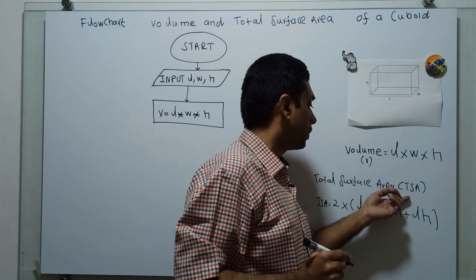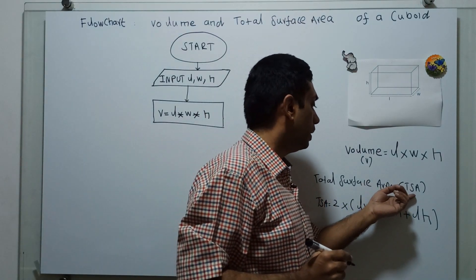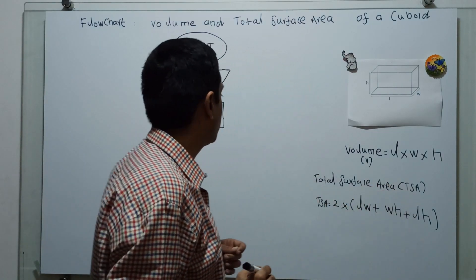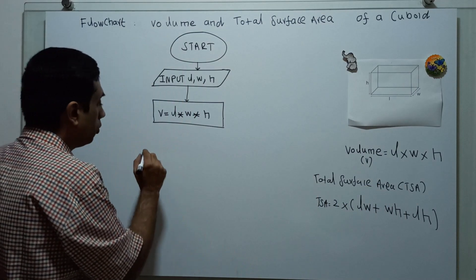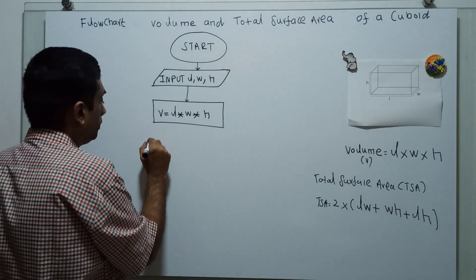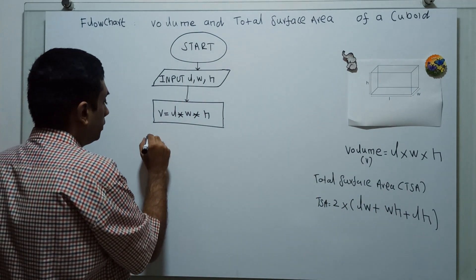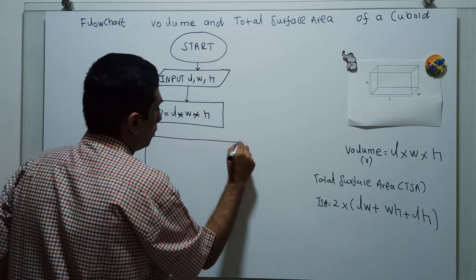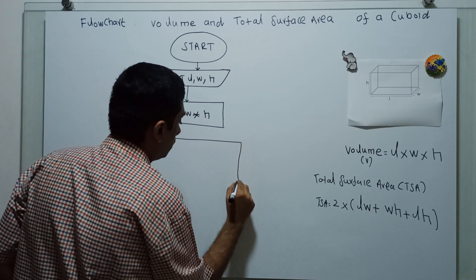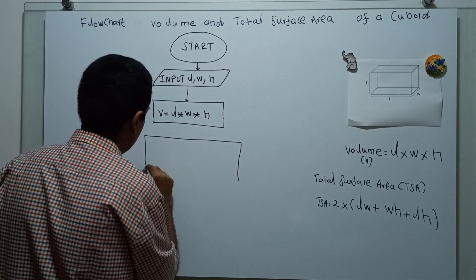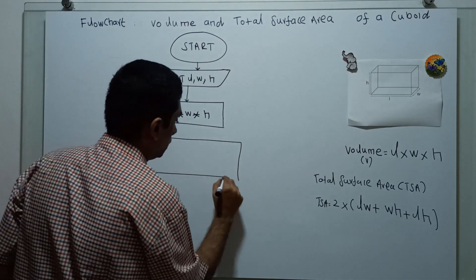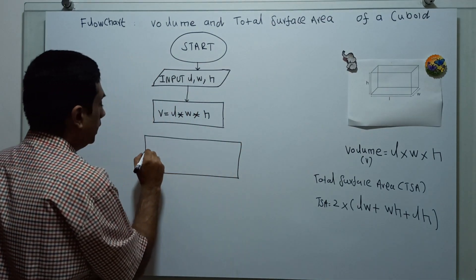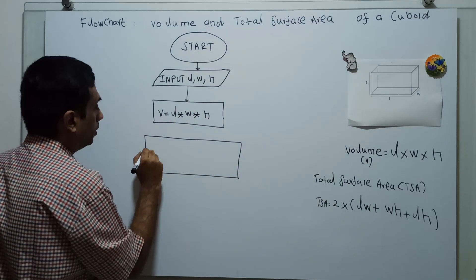Using the variable TSA to calculate the total surface area of the cuboid, I am now calculating the total surface area: TSA = 2 × (length × width + width × height + length × height).